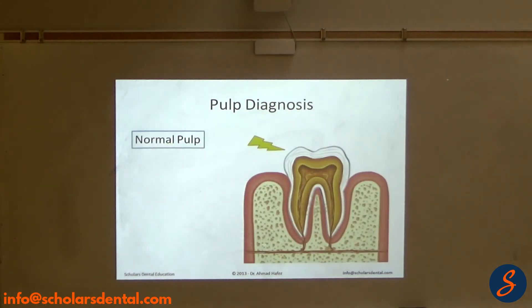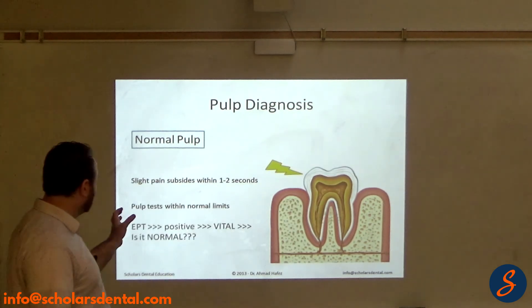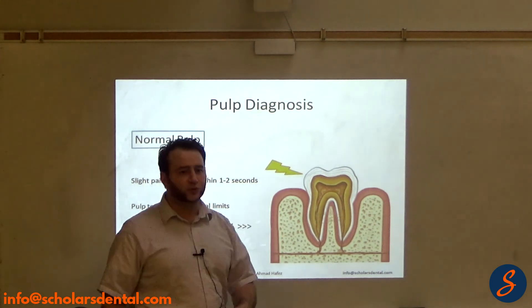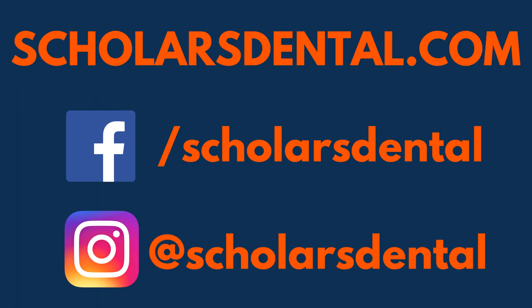So let's look at pulpal diagnosis first, before we go to periapical. In a normal pulp, if I stimulate the tooth — maybe with cold — what words would they use to tell me this is normal? They may say things like slight pain that subsides within one to two seconds after removal of the stimulus, which tells you the pulp is normal. They may say the pulp is within normal limits to cold testing — I'm trying to tell you what they may say in the question.